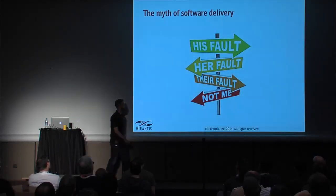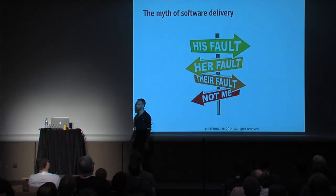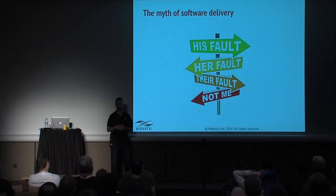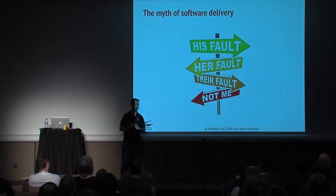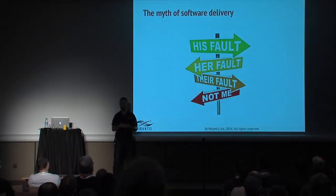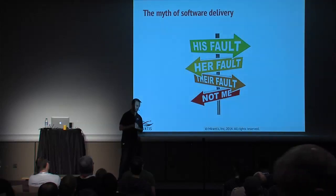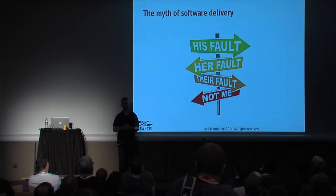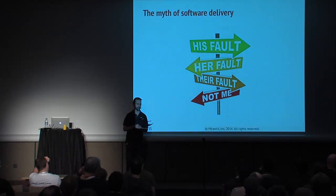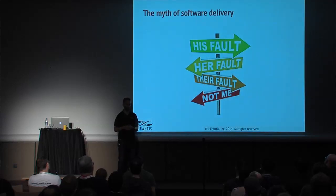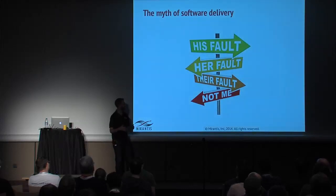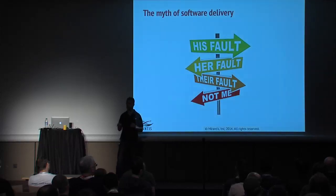I think I'm going to call this the myth of software delivery. A project gets hatched — we need something new, something shiny. Maybe it's a feature, maybe an internal-facing service. This mandate can come from management or from customers. We organize a team, spin up instances, and start developing. We go through sprints and turn out tons of code — we write to the requirements, get all the code done, and say it's finished. Meanwhile, project managers and C-level people are constantly checking on progress.